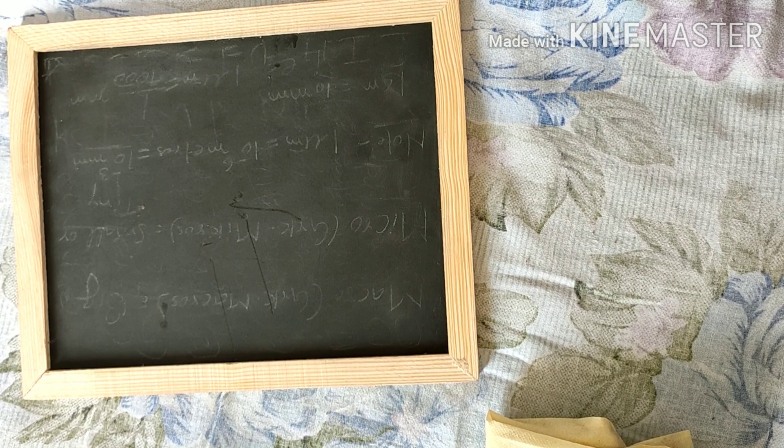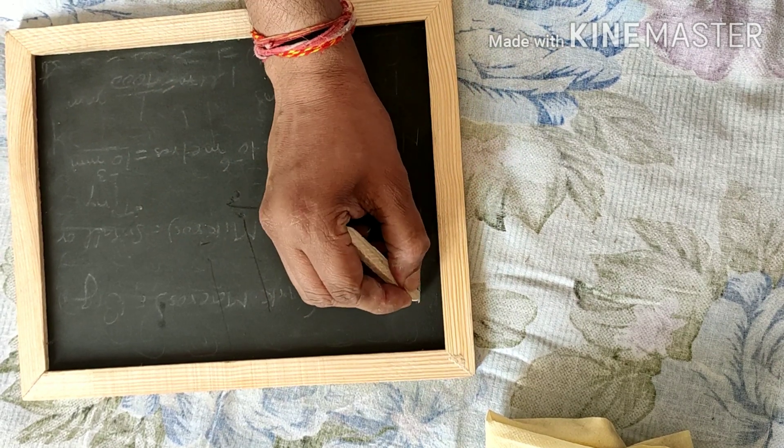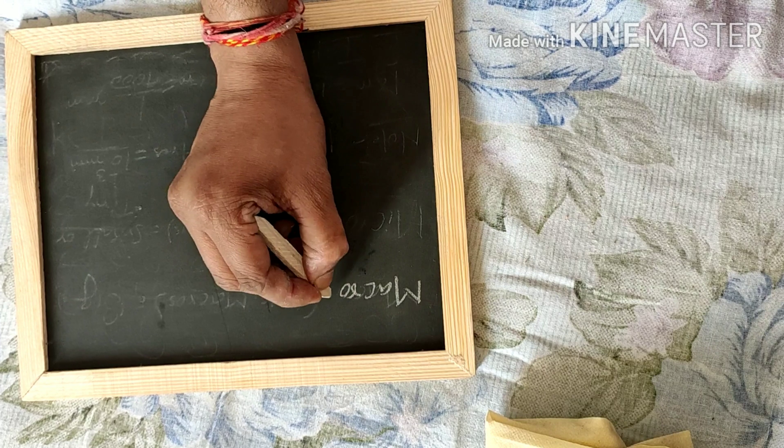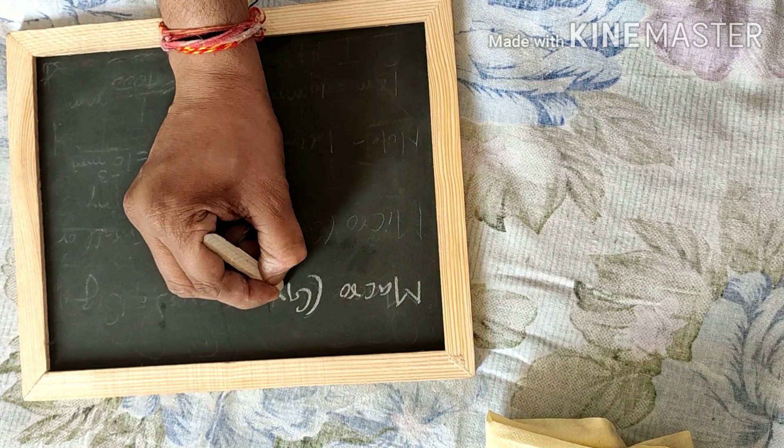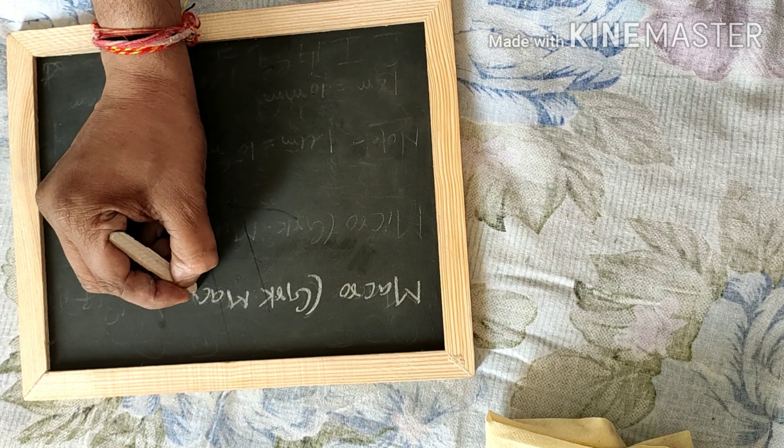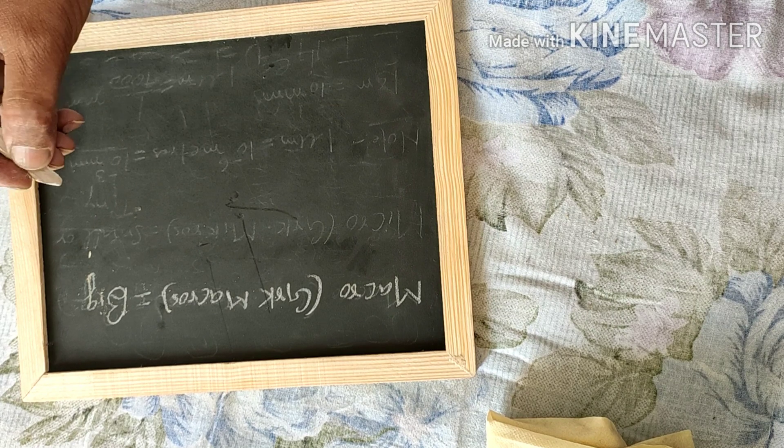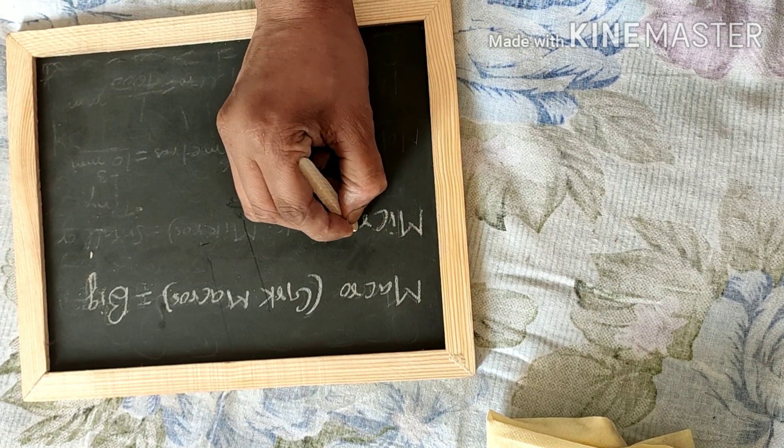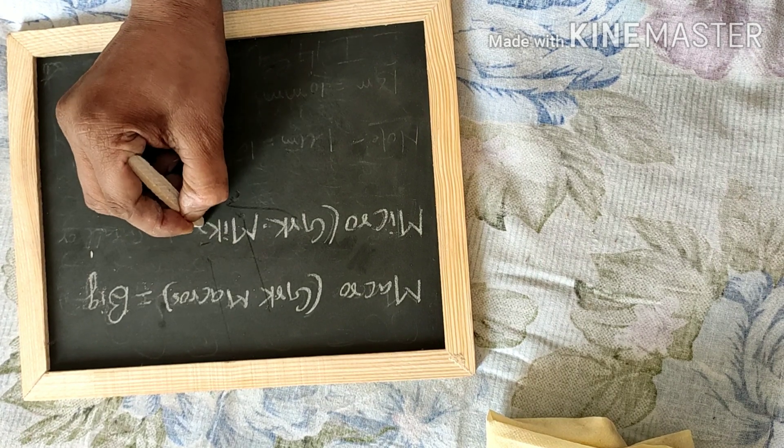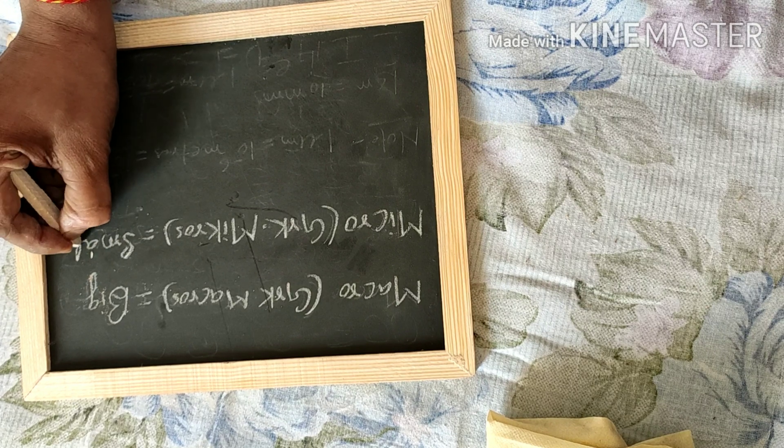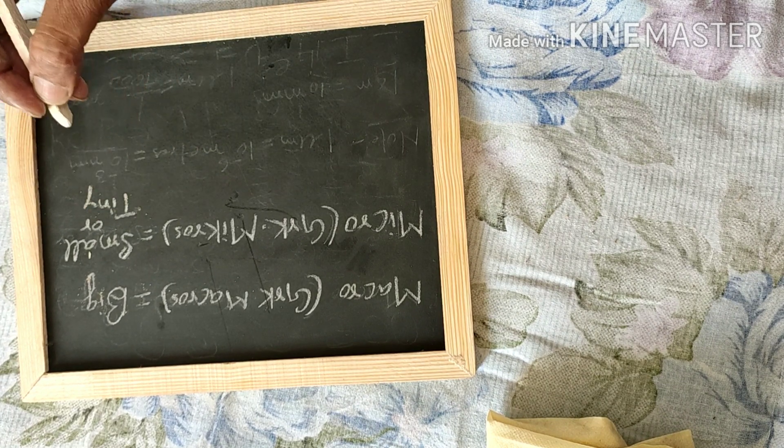Before we start the chapter, we will first discuss about the two terms: macro and micro. Macro is a Greek term, comes from Greek macros, means big. And another one is micro. This is also a Greek term, Greek micros, means small or teeny.